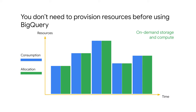BigQuery allocates storage and query resources dynamically based on your usage patterns. Storage resources are allocated as you consume them and deallocated as you remove data or drop tables. Query resources are allocated according to the query type and complexity. Each query uses some number of what are called slots — units of computation that comprise a certain amount of CPU and RAM.